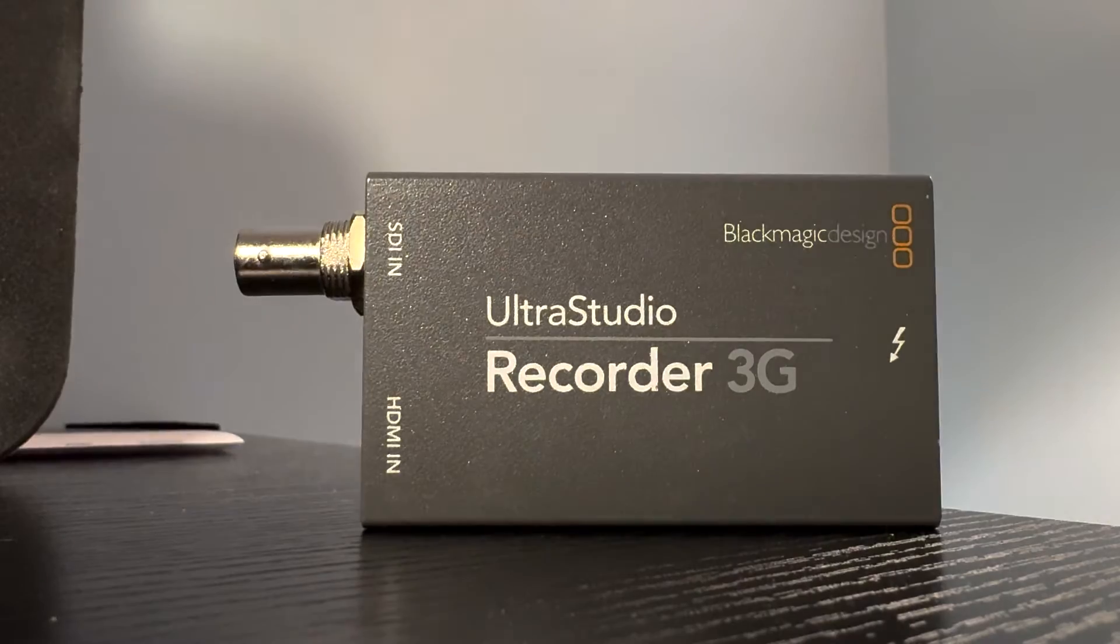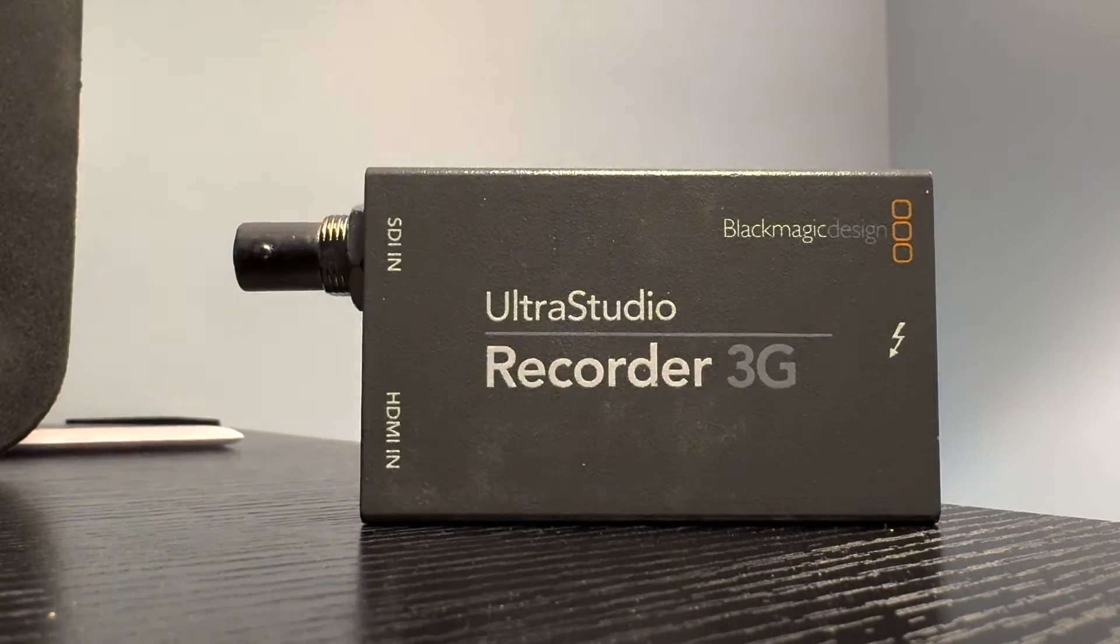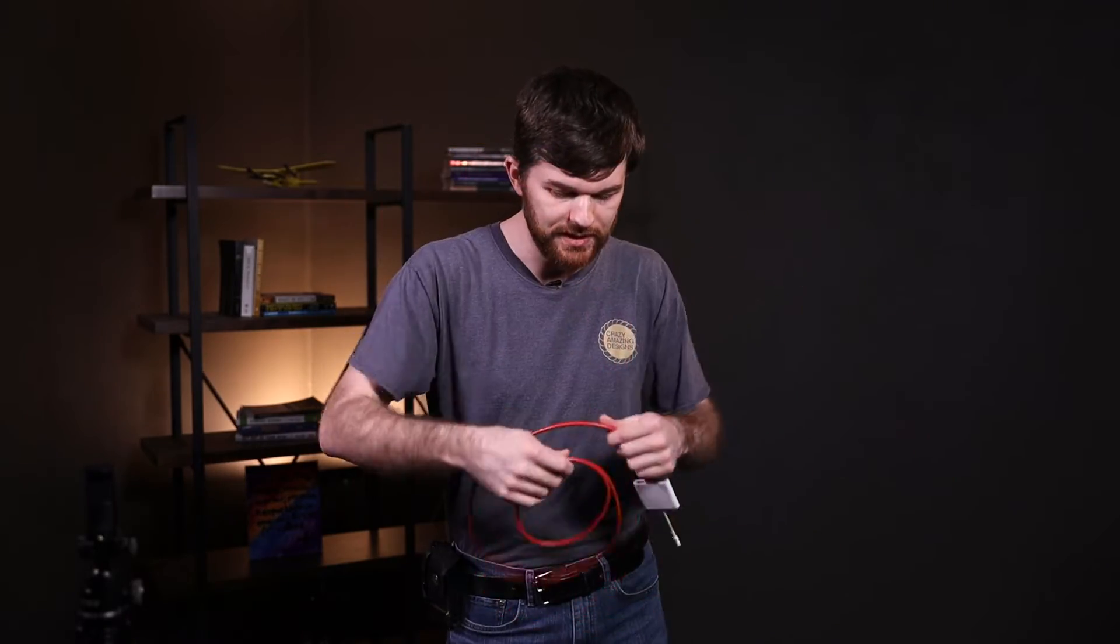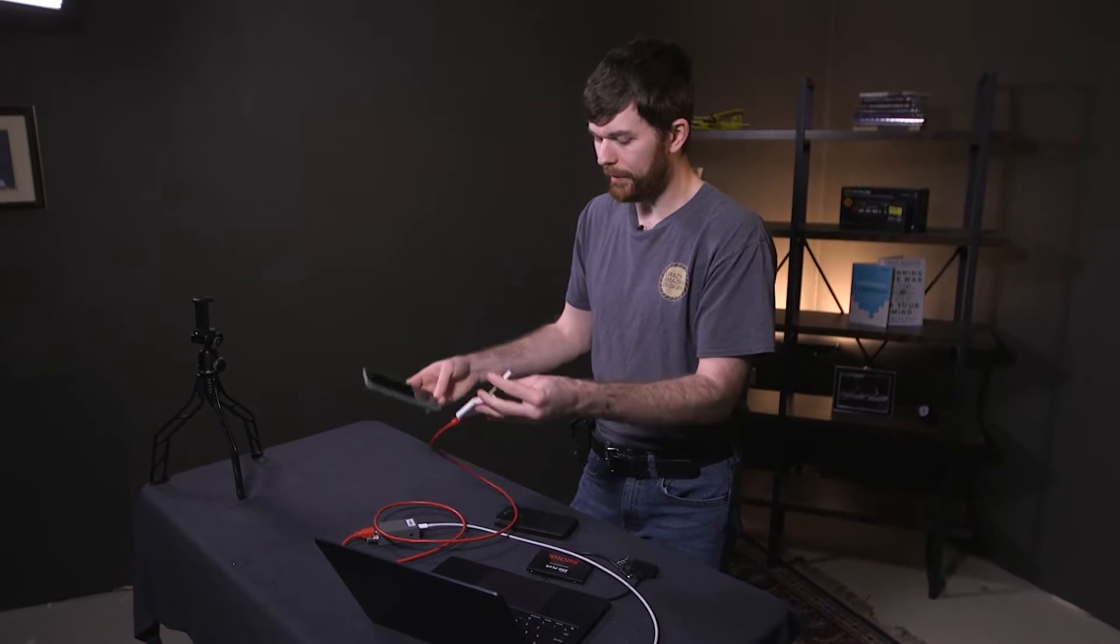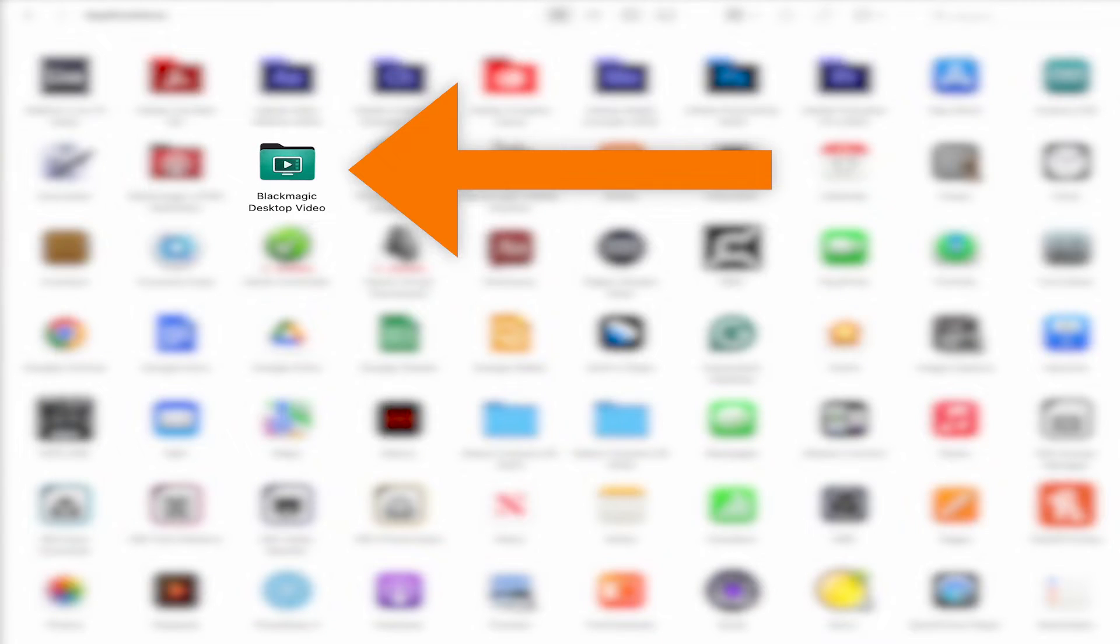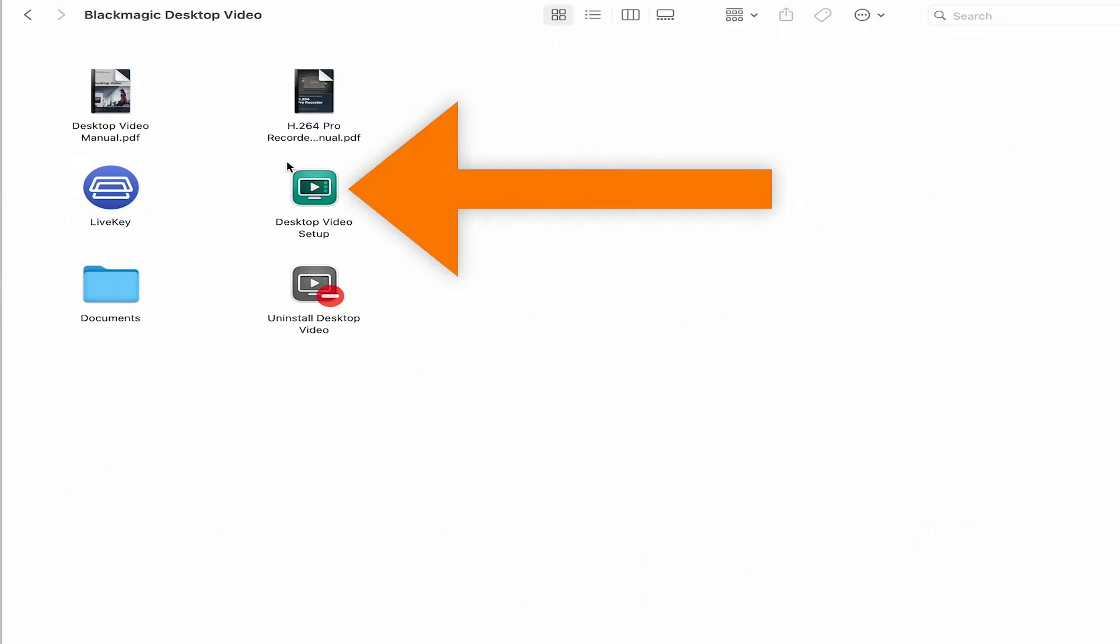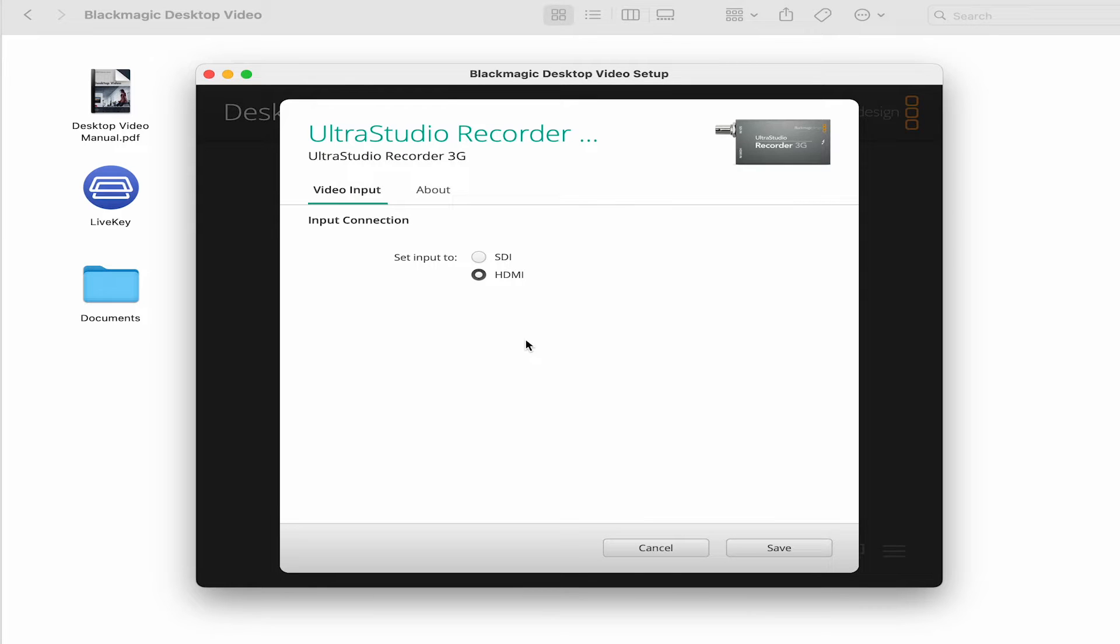When you're ready to go one step further or switch from your iPhone to using any camera with an HDMI out, here is your next upgrade. I have this Blackmagic Recorder 3G and I'm going to plug it into my computer. Now, my HDMI cable is here. I'm going to plug that into this device. And then I'll plug my iPhone into this device. So this setup does require some software to be running on your computer to make it work. So you're going to have to download that. And if you have questions about that, I have a video that I went over that. So I'll link that in the cards up top.